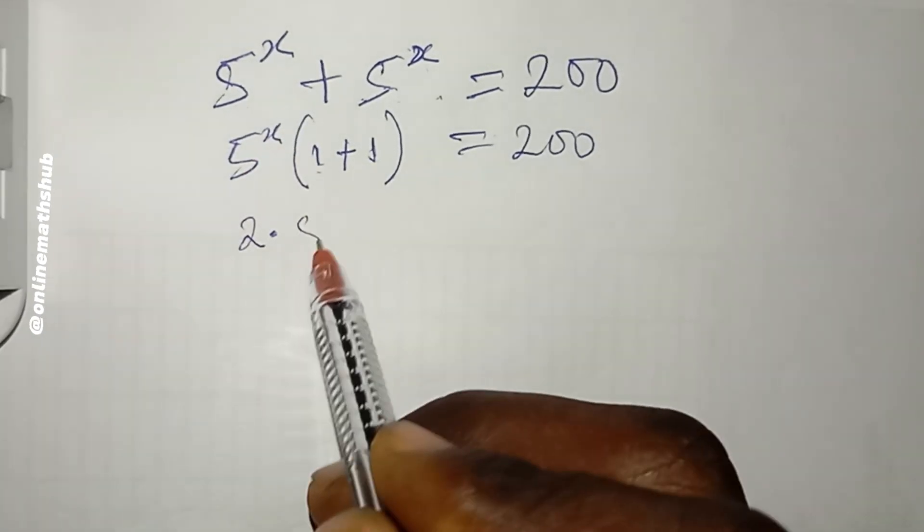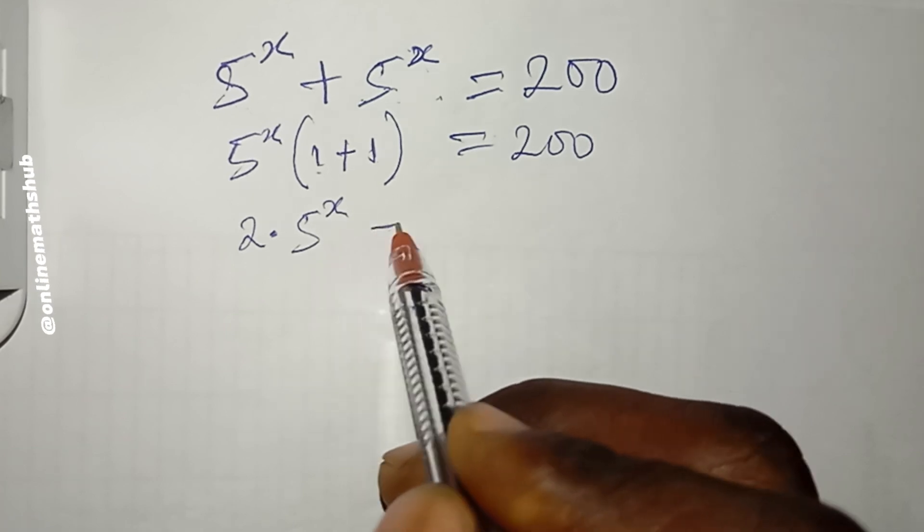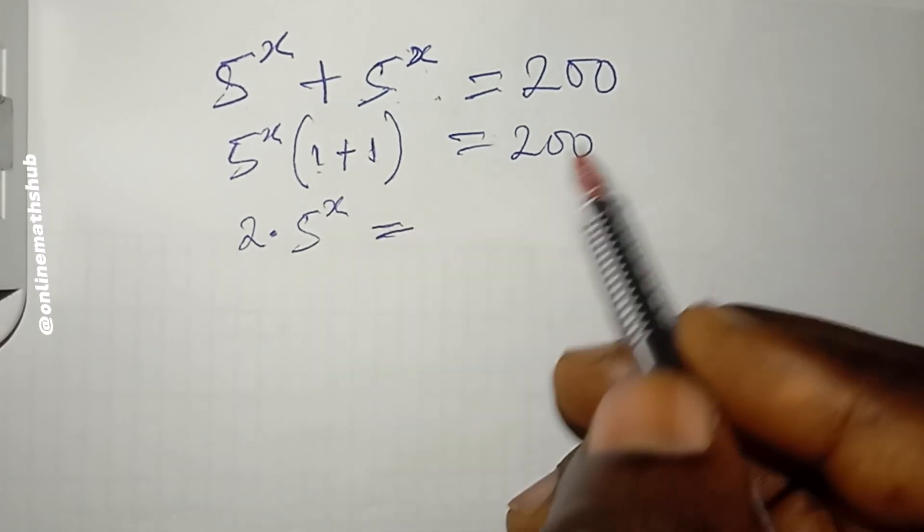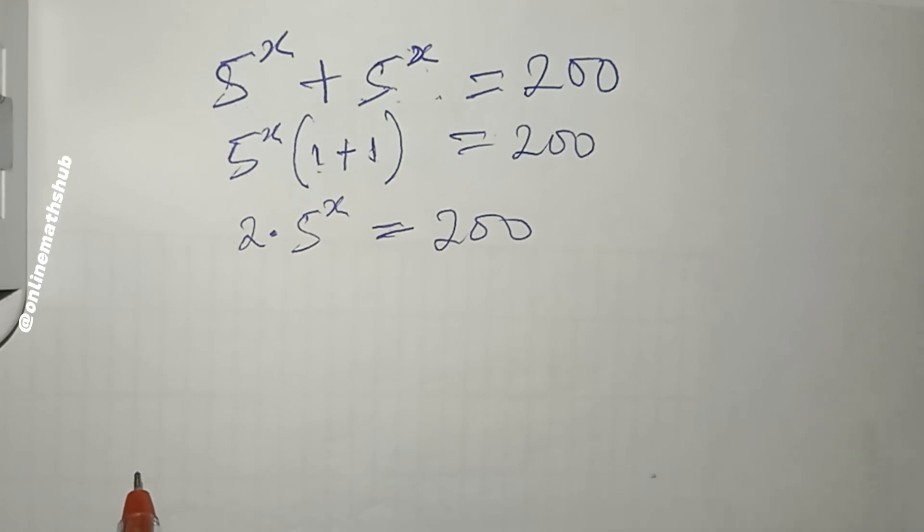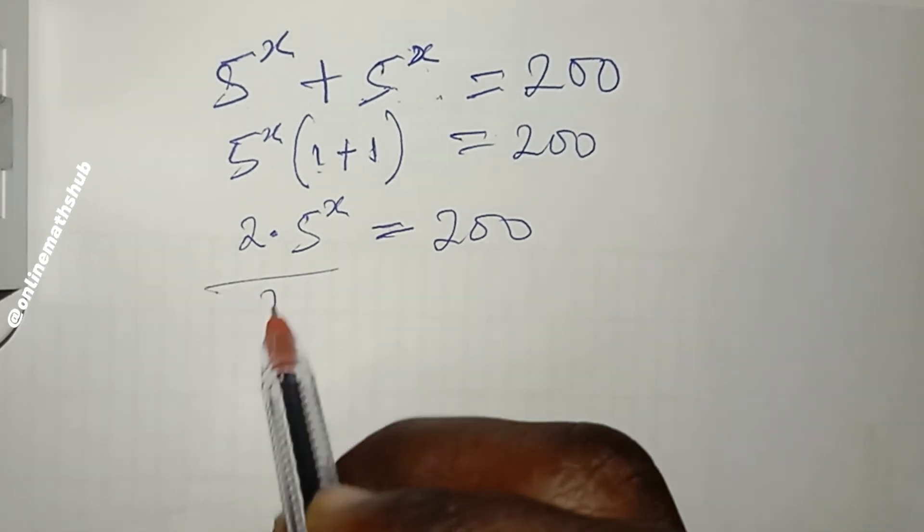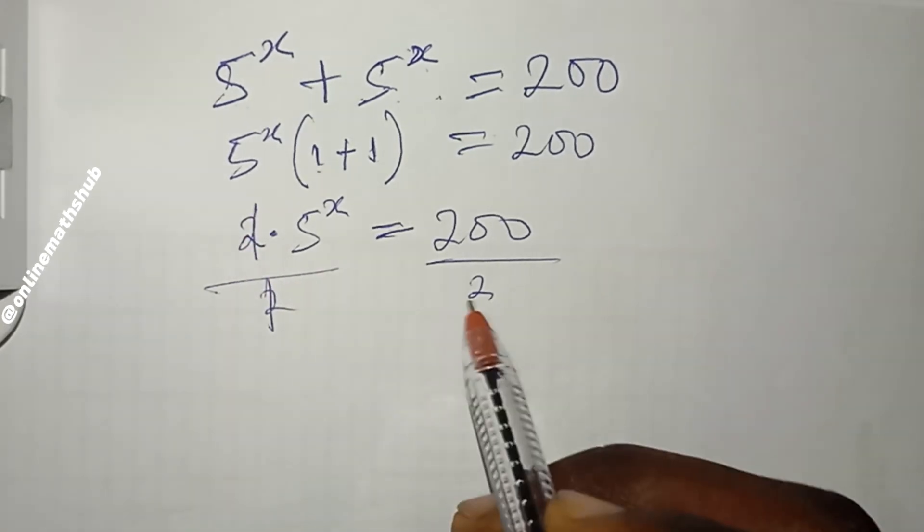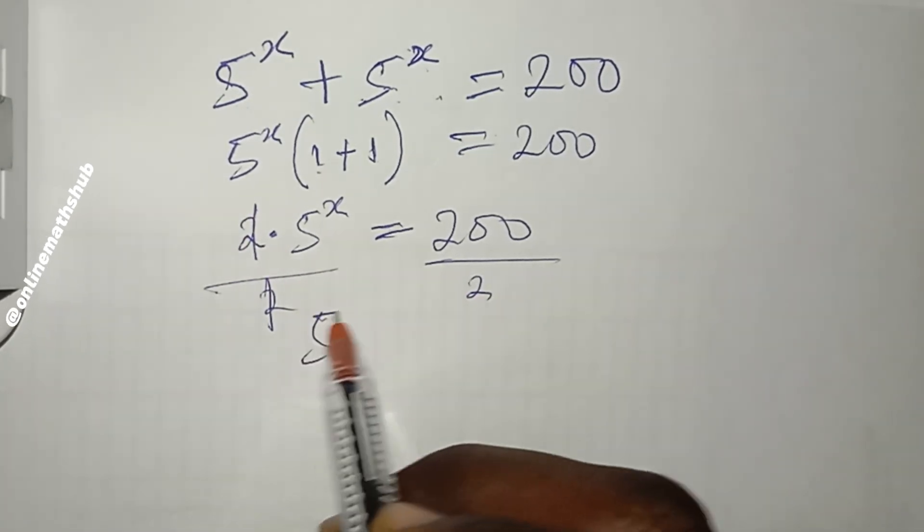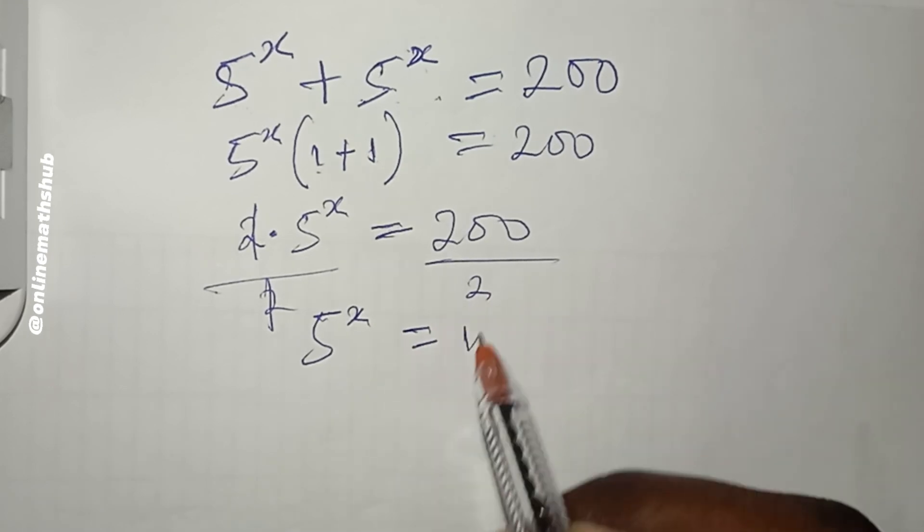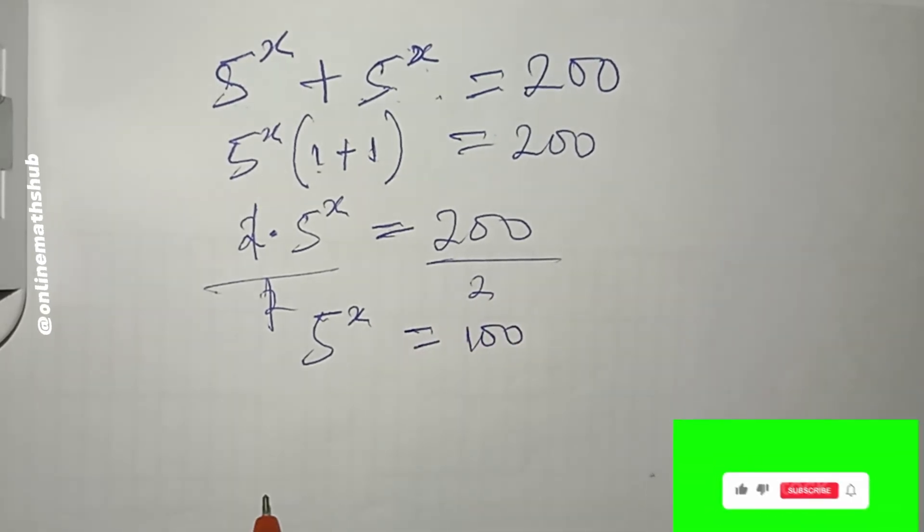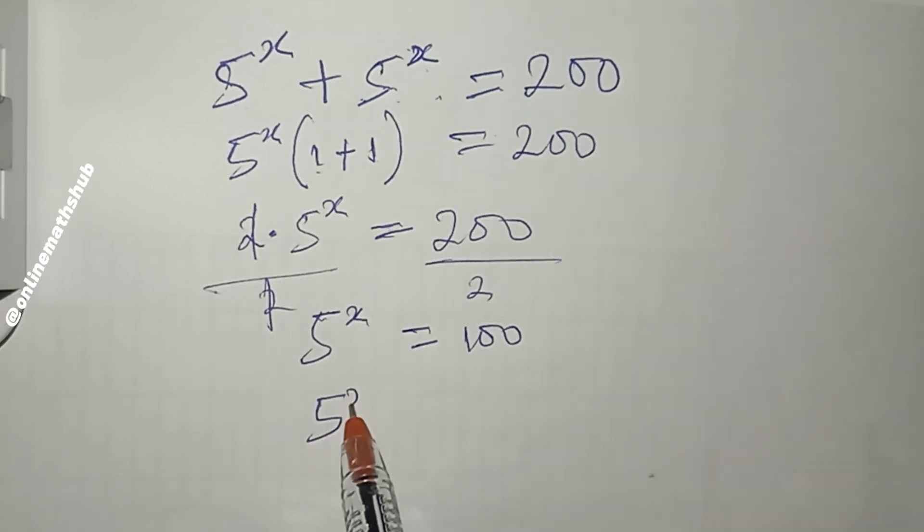Next, I can divide through by 2. If I do that, what I'm left with is 5^x = 100. We can also find a way to write this 100.